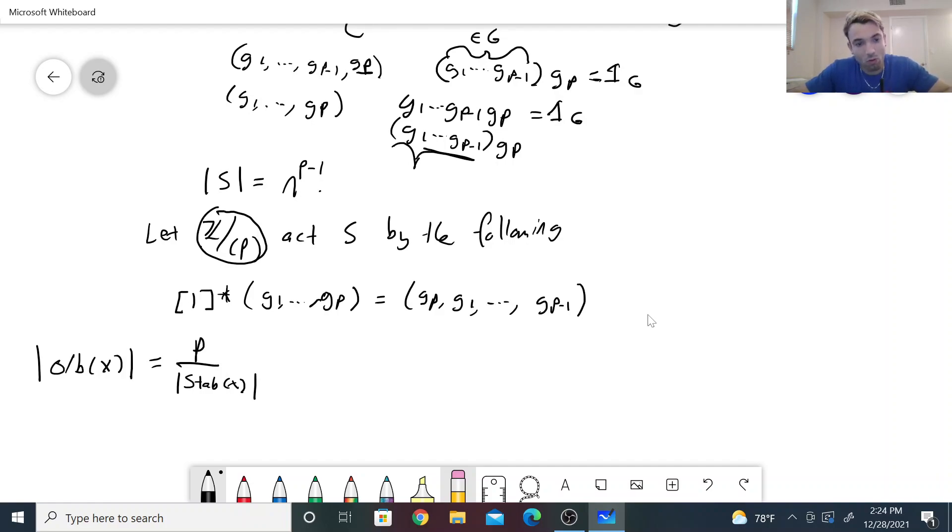Well, what we do know is that the stabilizer of x, the cardinality or order in this case, only has two possibilities since it must divide p. Namely, it's either 1 or p, as p is a prime. So if the stabilizer has order 1, then the orbit of x, the cardinality of that would be p. And if the stabilizer had order p, then the orbit of x would be 1. So this implies that the orbit of x, the cardinality of the set, is 1 or p. There's only two options.